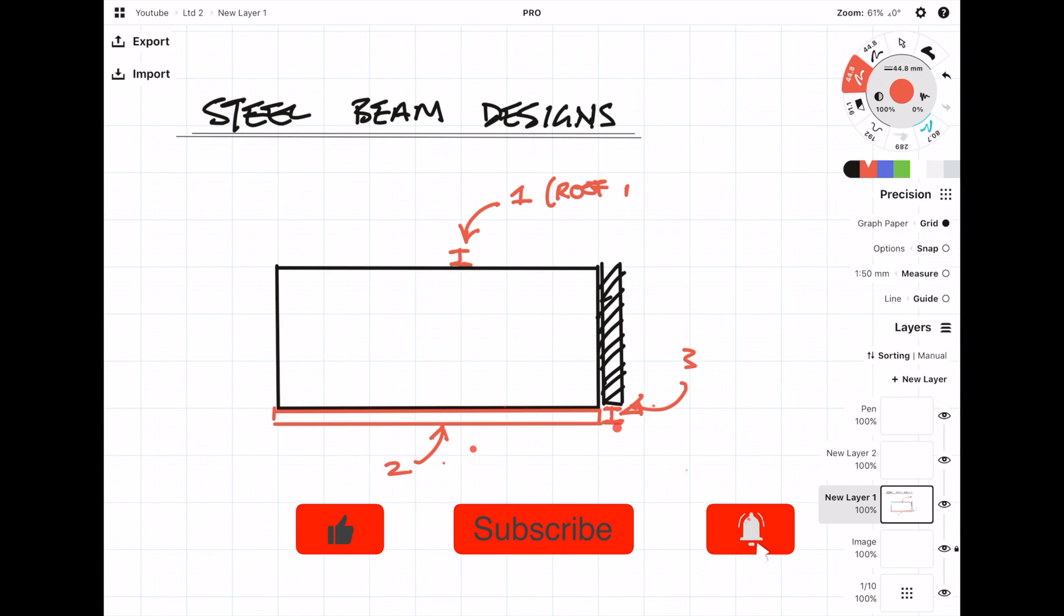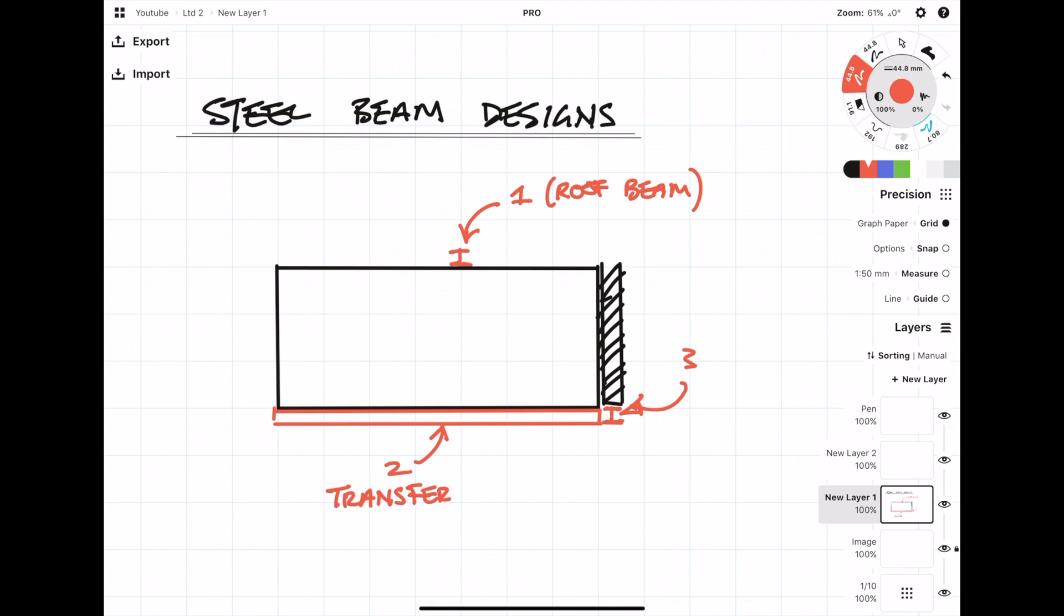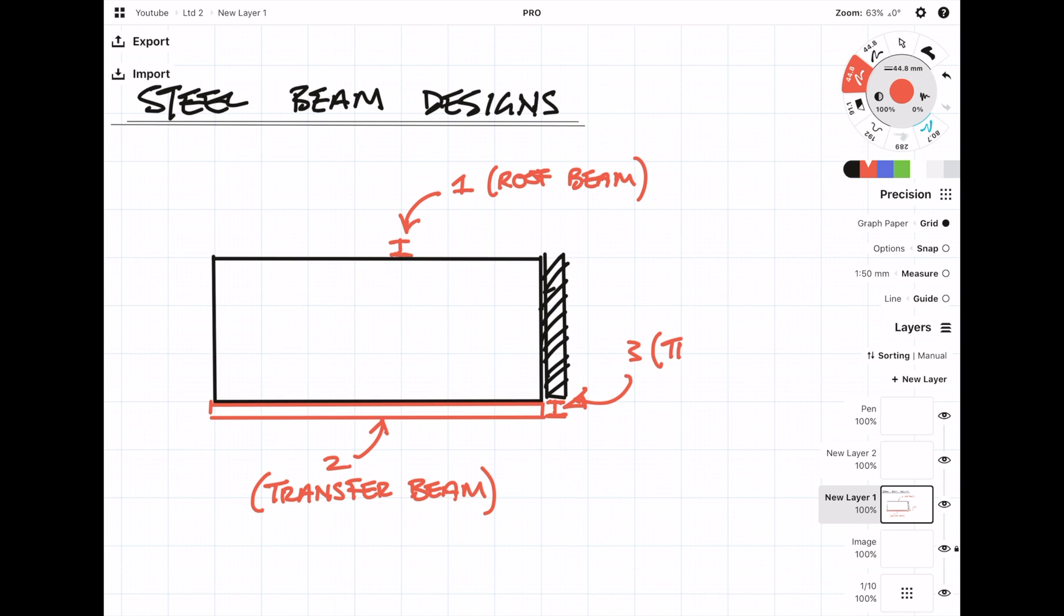The first thing we've got is the roof beam, and that can be designed as a normal beam. Then we've got beams two and three, and these are transfer beams. What's going to be particularly challenging about designing transfer beam three is that it's picking up another transfer beam.